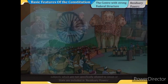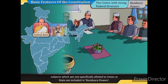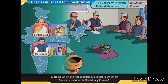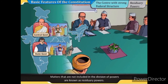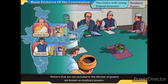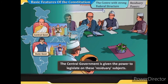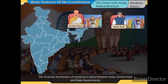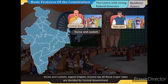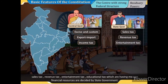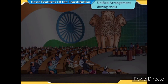Residuary powers cover subjects not specifically allotted to the union or state; the central government is given power to legislate on these residuary subjects. Financial distribution of resources is done between the union and state governments. Major taxes like excise and customs, export-import, and income tax are decided by the central government, while sales tax, revenue tax, entertainment tax, and educational tax — having meagre financial resources — are decided by state governments.